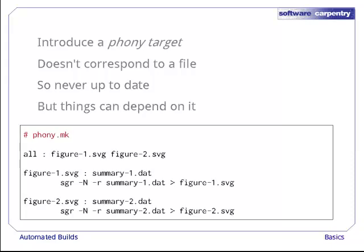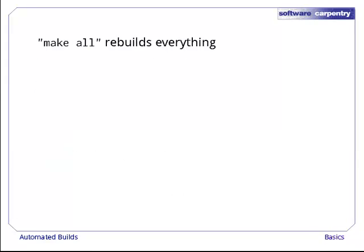Here's our third makefile, phony.make. We've introduced a phony target called all, which depends on figure1.svg and figure2.svg. If we type make all, make will decide that the all target is out of date, since there's no file called all in the current directory. And since all depends on figure1.svg and figure2.svg, make will go and update them both, which is exactly what we want.